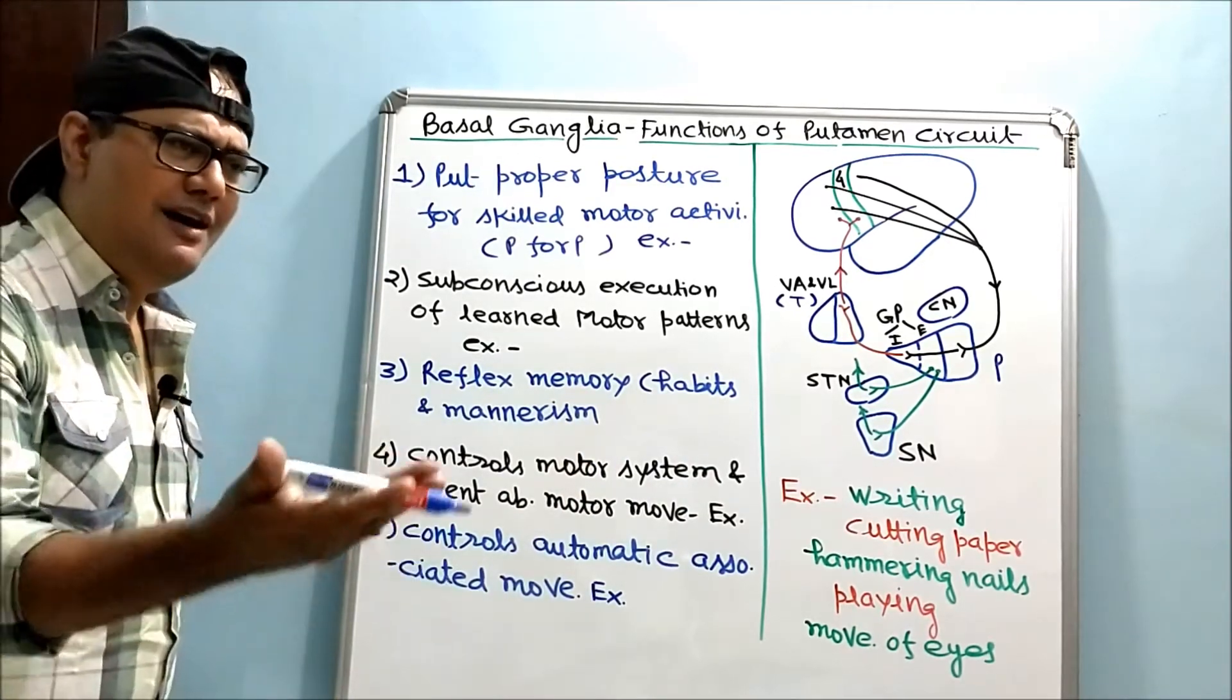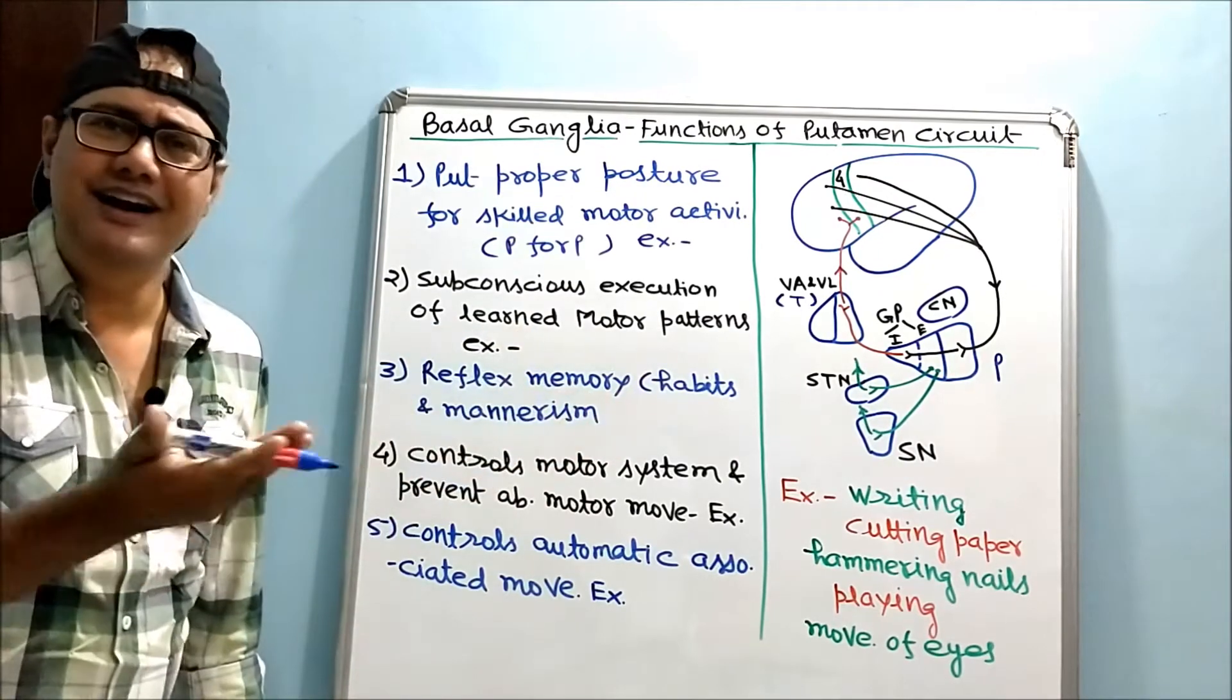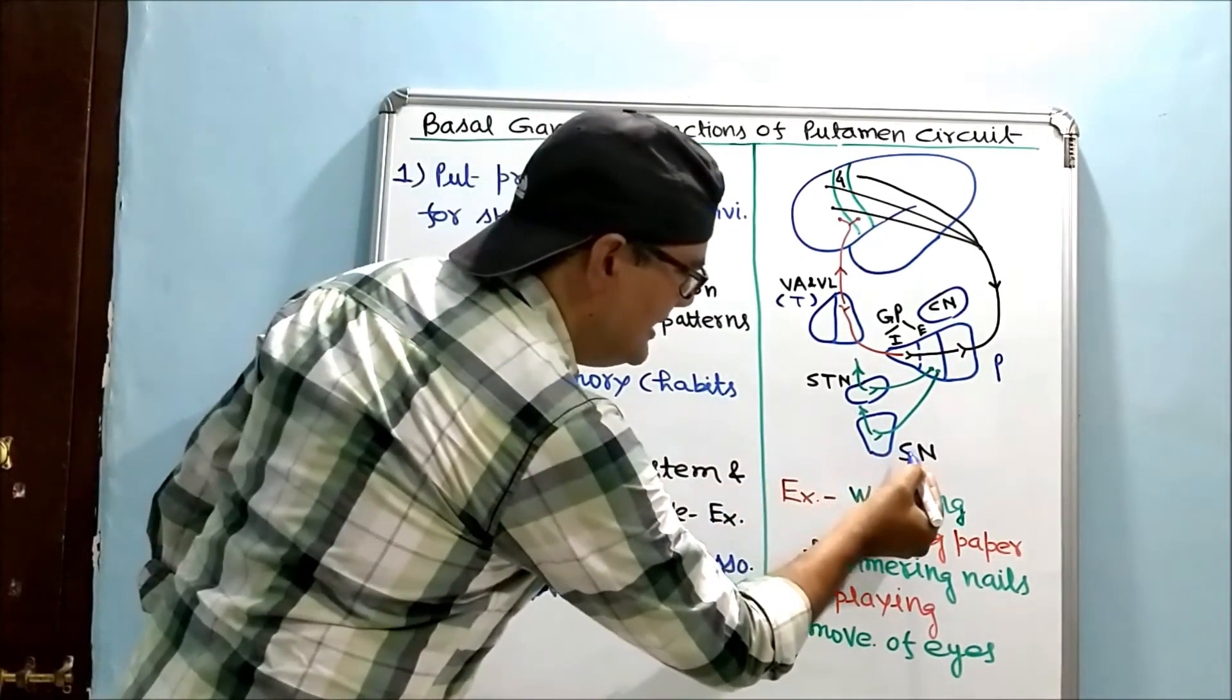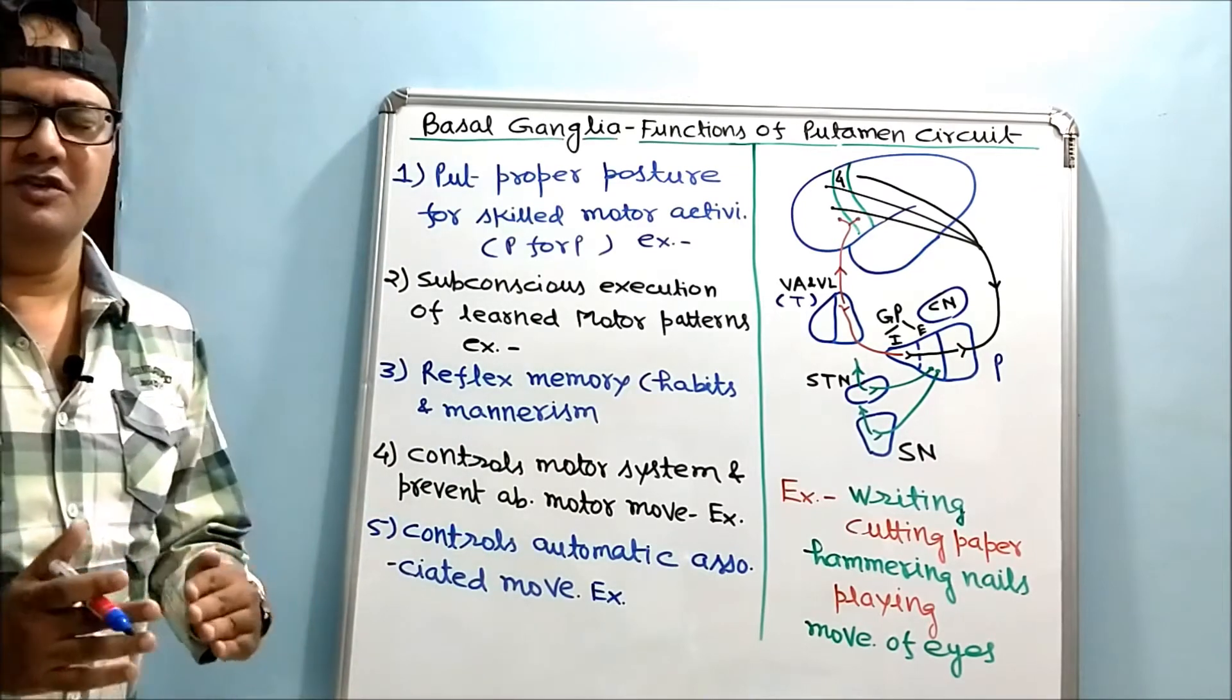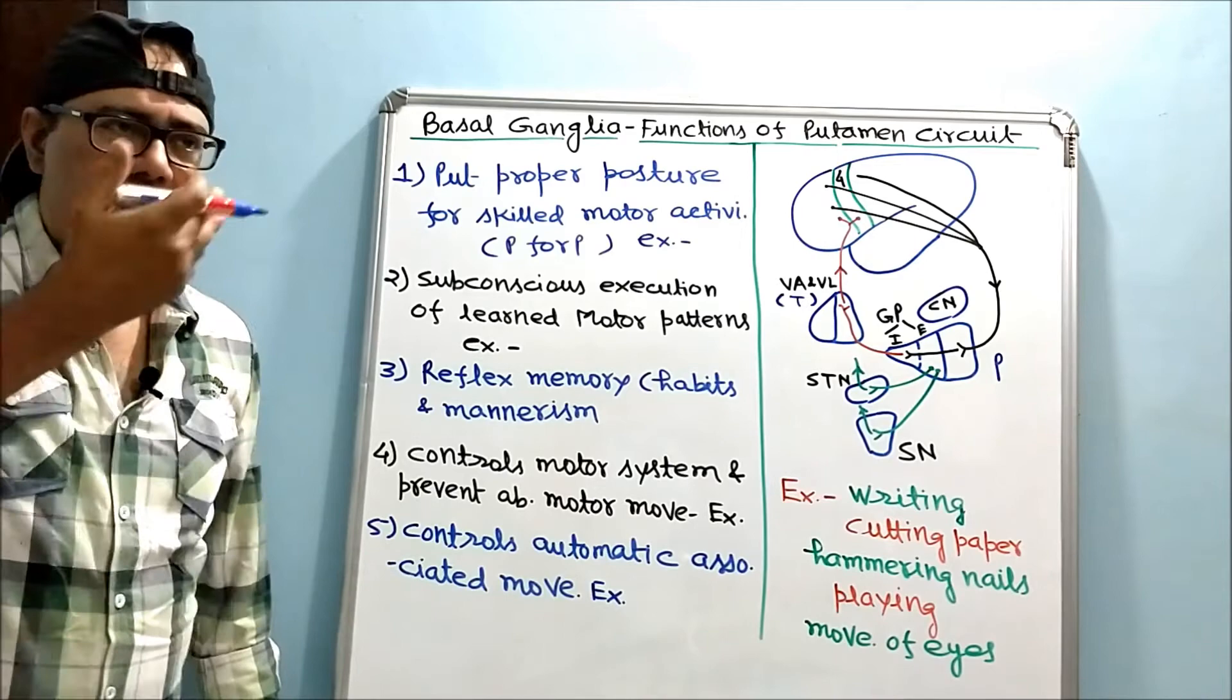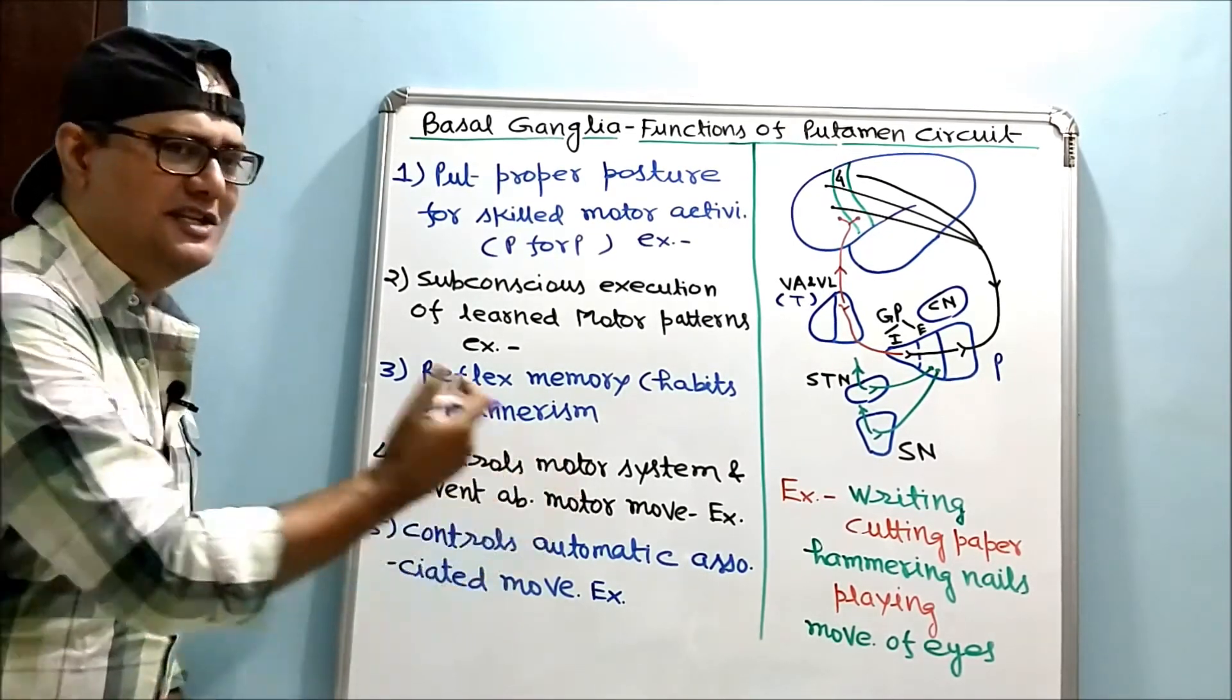Abnormal movements like chorea, athetosis, tremors begin if different nuclei are lesioned. Also in Parkinsonism, where lesion is in substantia nigra, automatic associated movements are lost, for example, swinging of arms while walking or facial expression while talking.